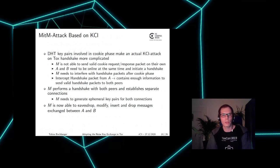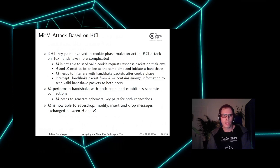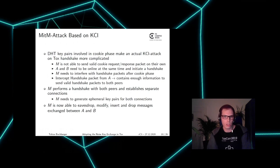Because of the cookie phase, the attacker Mallory is not able to send valid cookie request or response packets on his own. This means Alice and Bob need to be online at the same time and initiate a handshake themselves. So the attacker cannot initiate a handshake on his own. If Alice and Bob do initiate a handshake, then Mallory needs to interfere with the handshake packets after the cookie phase and also needs additional key pairs for both connections.